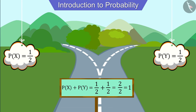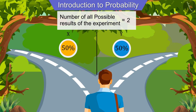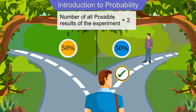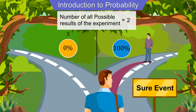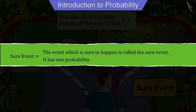Let's come back to Joseph's situation. Joseph was just choosing the right path when his friend Mohsin arrives and tells him that road Y is the right way. In such a situation the probability for road X changes to zero and that of road Y becomes 100 percent, because now we know which is the right path. Walking on road Y is a sure event, and an event that is sure to happen is called a sure event — it has a probability of one.